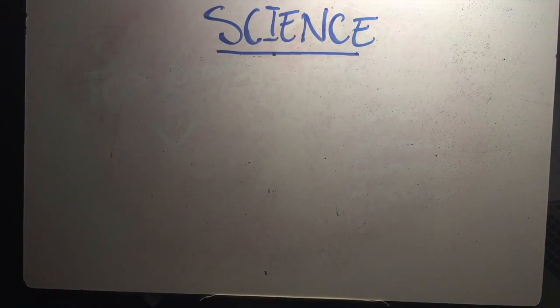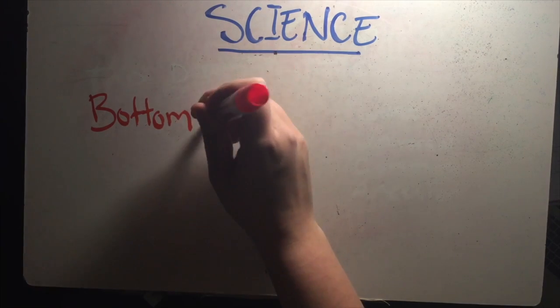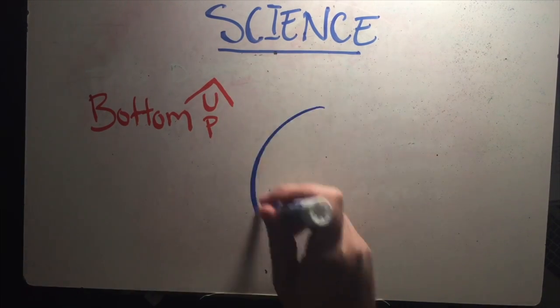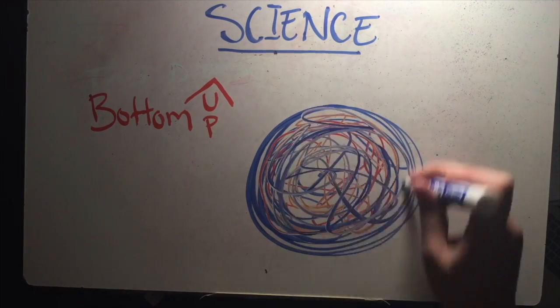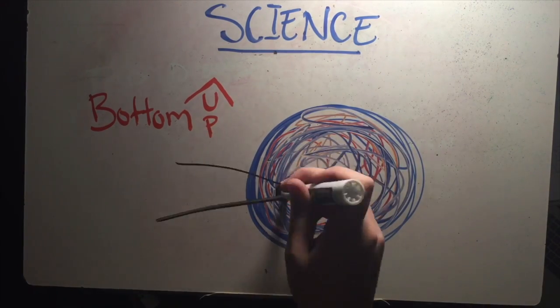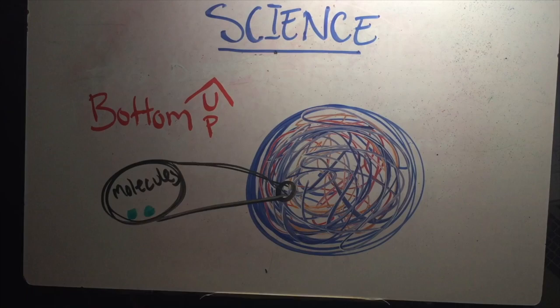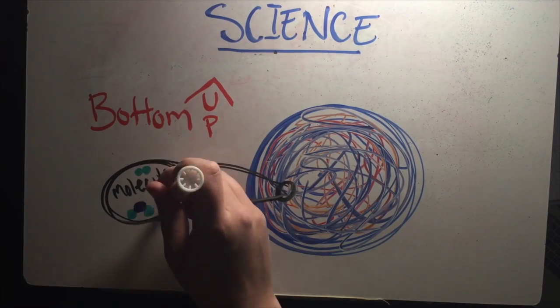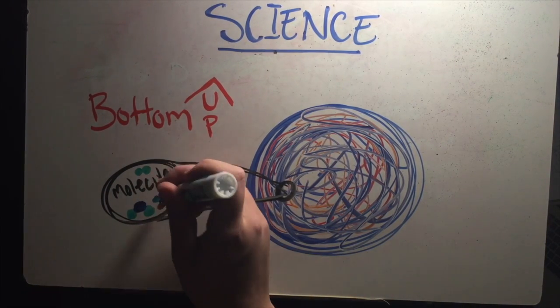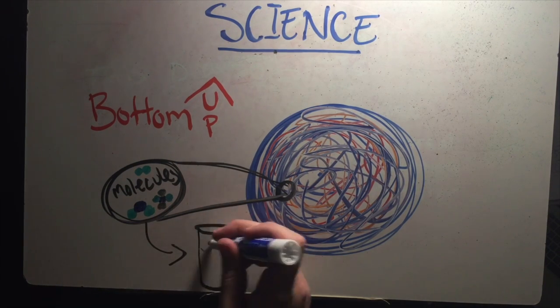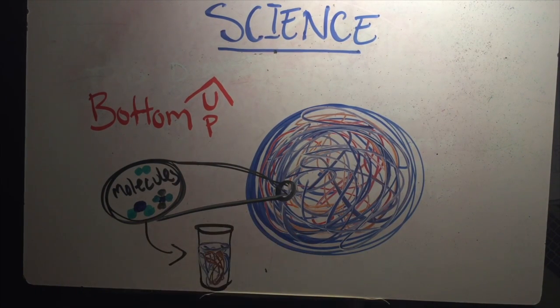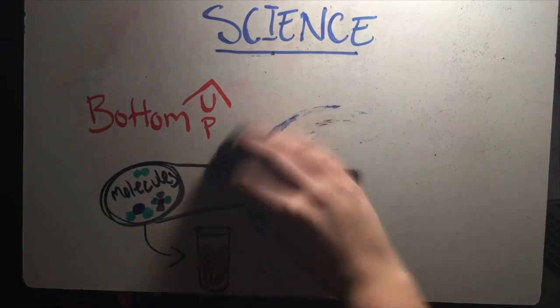The second method is called bottom-up. This method studies the conditions present on early Earth and tries to replicate the process that life would have arisen by. Researchers study very closely the chemicals, molecules, and compounds that would have been present before life began and how they would have interacted with each other under different conditions. Then they try to produce these conditions and interactions in a lab with the ultimate goal of replicating the origin of life.